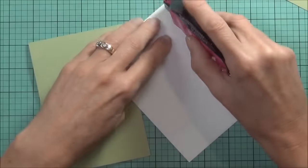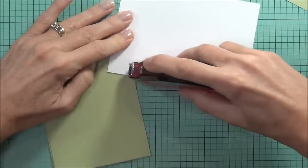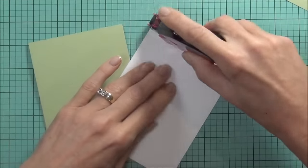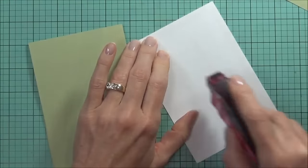I thought it looked really pretty with a green card base. This is an American Crafts cardstock called Mint. I'm just using my stamp runner to apply some dry adhesive to the front of my card.